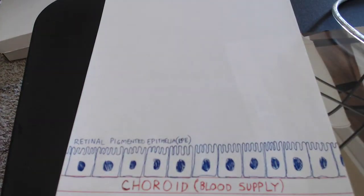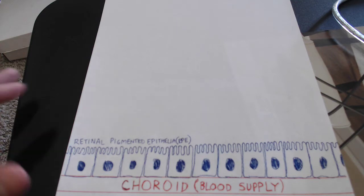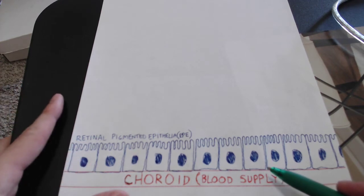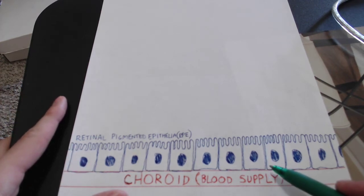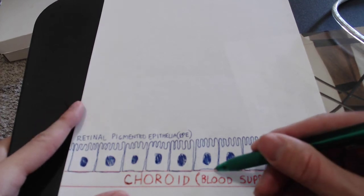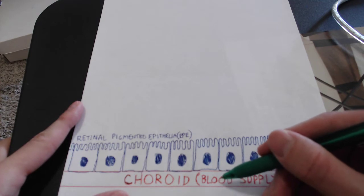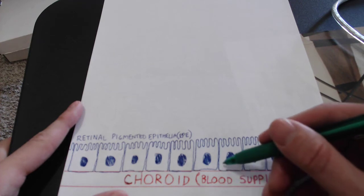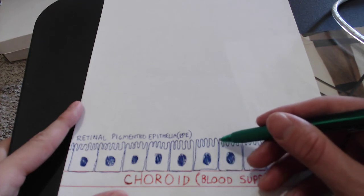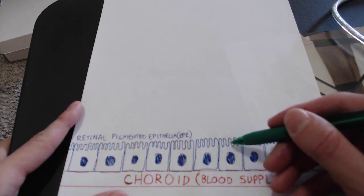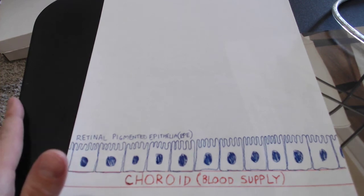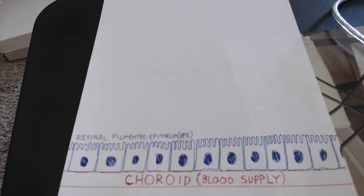The RPE cells sit on top of the choroid blood supply and are the most posterior cell type you are going to find in the retina. As with any epithelial cell in a single layer, RPE cells are polarized. They have their basolateral side at the bottom facing towards the basal lamina and the blood supply, and then up here where you see these little microvilli — these tentacle-looking things — that is the apical side of the RPE cells.